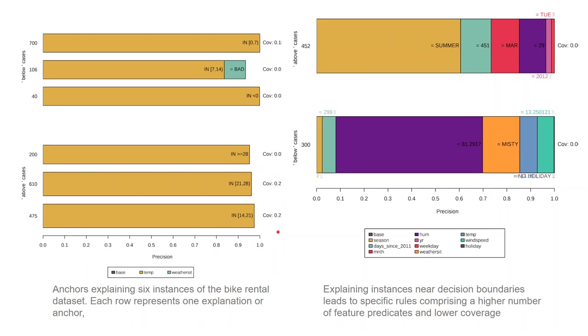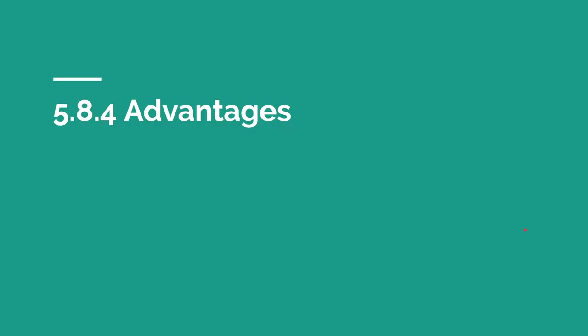The x-axis depicts the rule's precision and the bar thickness corresponds to its coverage. These anchors show that the model mainly considered temperature for predictions in the cases on the left. However, in the cases on the right, we can see some instances where the model didn't decide with much confidence about its prediction. We can see that the coverage is very low compared with at least 20% coverage on the right side. In such cases, anchors get more specific and comprise more features and apply to fewer instances, as we can see here.